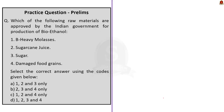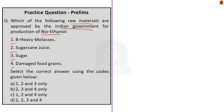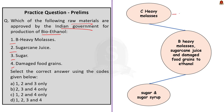The next question gives four raw materials and asks which are approved by the Indian government for bioethanol production. Initially the government allowed only C-heavy molasses. In 2018, the government allowed conversion of B-heavy molasses, sugarcane juice and damaged food grains to ethanol. Then in 2019, the government allowed conversion of sugar and sugar syrup into ethanol. So the correct answer is option D — 1, 2, 3 and 4.